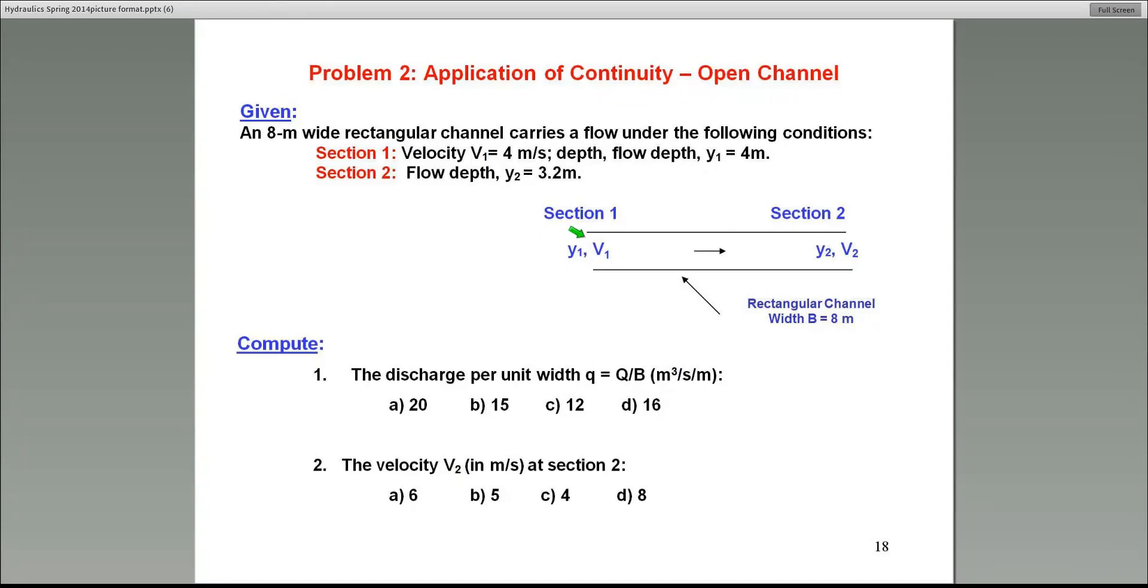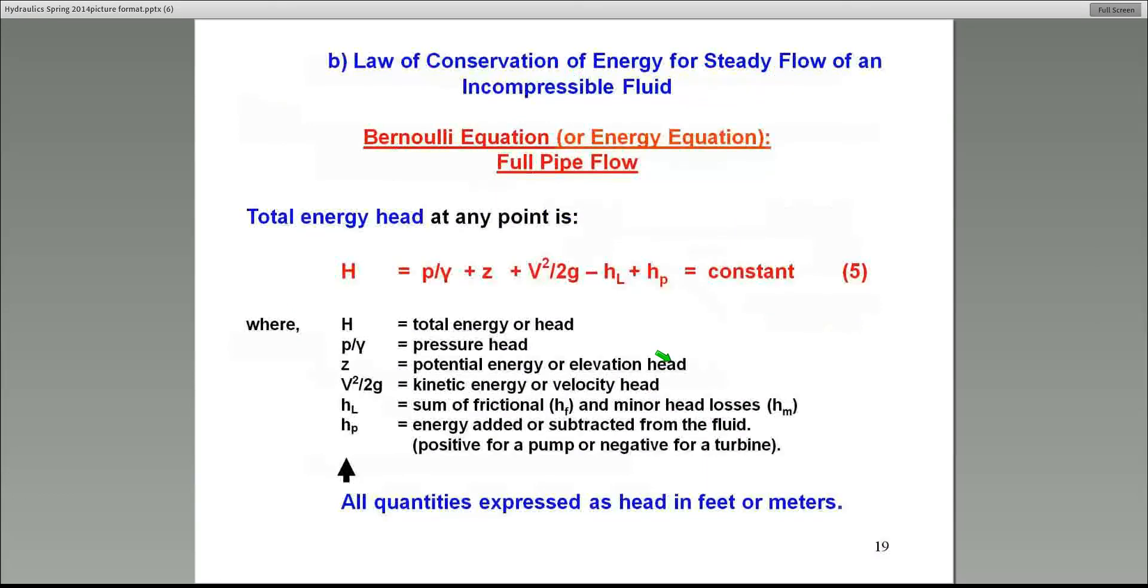So Y1 is, in this case, 4 meters. V1 is 4 meters. So 4 times 4 is 16. Okay? So the units of small Q are meter cubed per second per meter, or CFS per foot. It's a commonly used discharge variable in open channel systems.